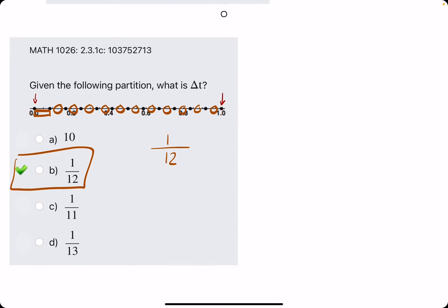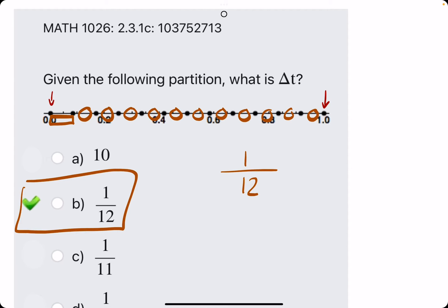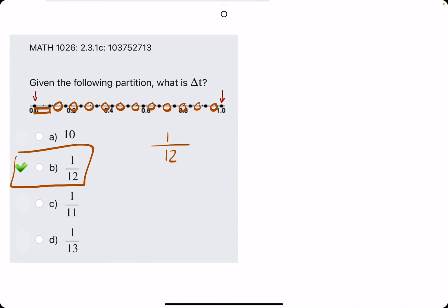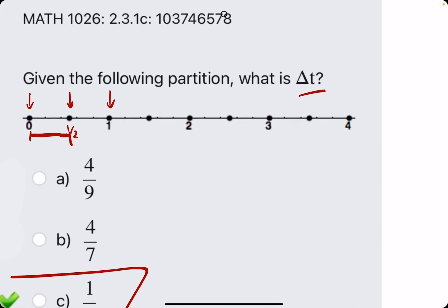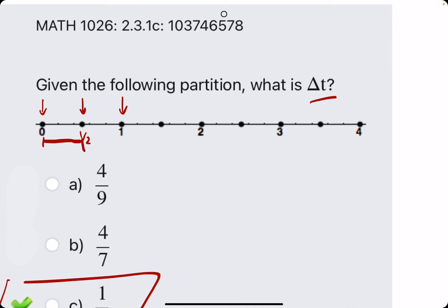So from zero to one we divide it by twelve partitions, so that means each delta t, each difference between dot to dot, must be one twelfth. So keep in mind we could have applied this to this one as well or the other two.